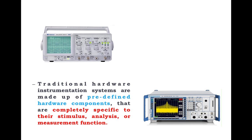All these traditional hardware systems are made up of predefined hardware components that are completely specific to their stimulus, analysis, or measurement function. For example, a CRO has a microprocessor, a board, ADC, DAC, and predefined channels — all specific to what the manufacturer designed it for. That is the only job the instrument will do. Whatever the CRO manufacturer designed it for — only viewing the signal — that is the only function it can perform. That is called a traditional instrument.